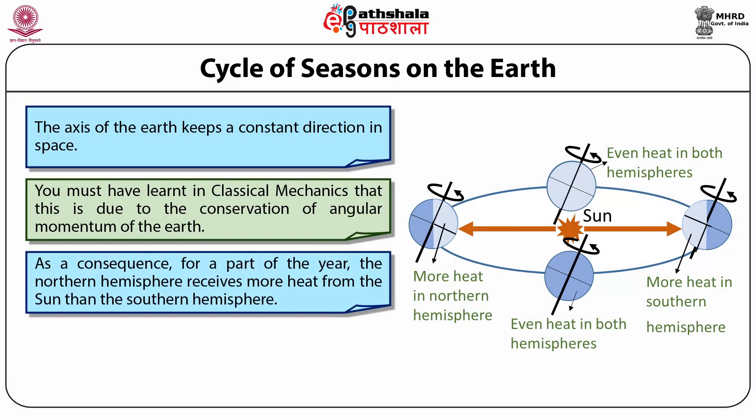More heat is received by the northern hemisphere when the earth is on the left of the sun in the picture, because the northern hemisphere is oriented towards the sun and the sun's rays are striking this part of earth directly. Because of the same tilt, the southern hemisphere is oriented away from the sun and the rays that fall are not direct, hence there is a lesser amount of solar radiation falling in the southern part — it's winter in the southern hemisphere. The situation reverses after six months when the southern hemisphere is oriented towards the sun.